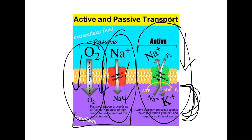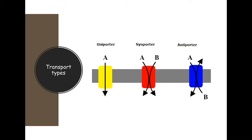A common example of active transport discussed in textbooks is the sodium-potassium pump, where you actually have to pump and move things across the membrane.